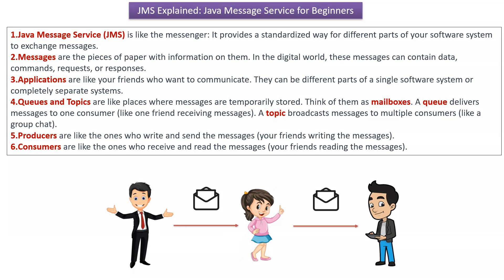Queues and topics are like places where messages are temporarily stored — we can think of them as mailboxes. A queue delivers messages to one consumer, like one friend receiving a message. A topic broadcasts messages to multiple consumers, like a group chat.